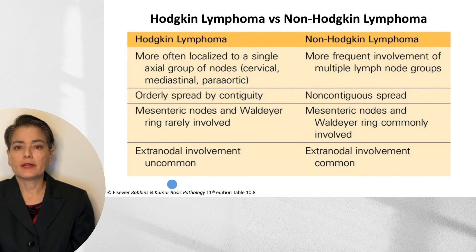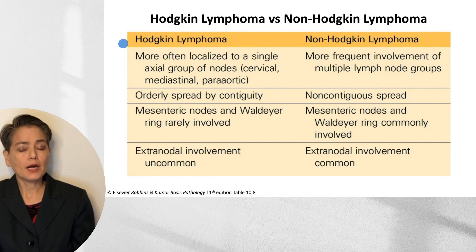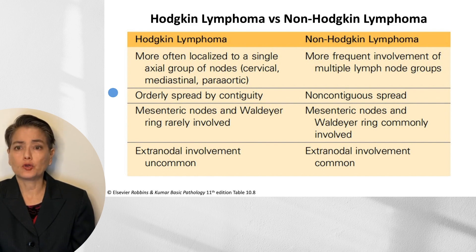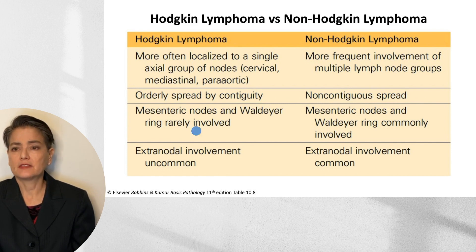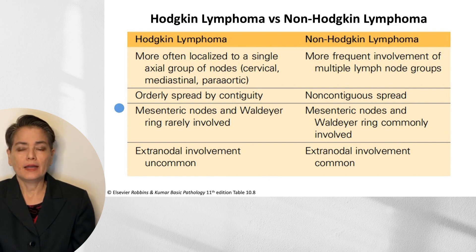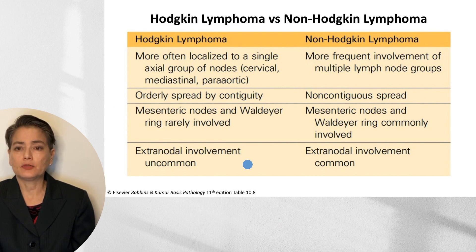This image helps solidify the differences between the Hodgkin lymphomas and the non-Hodgkin lymphomas. Hodgkin lymphomas are quite unusual — they're most often localized to a single axial group of nodes, such as a cervical or mediastinal lymph node group, and they tend to have a very orderly spread from one set of lymph nodes to a contiguous set. This contrasts with the somewhat random and non-contiguous spread seen in non-Hodgkin lymphoma. Hodgkin lymphoma rarely involves mesenteric nodes or the Waldeyer ring, and we only very rarely see extranodal involvement.